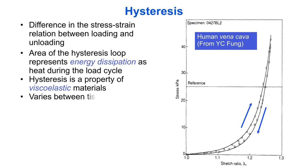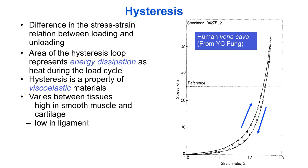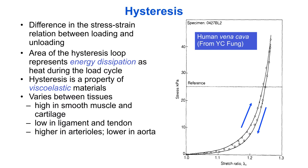Hysteresis varies considerably between tissues. It is low in ligaments, tendons, and veins, but high in cartilage and smooth muscle tissues such as intestines and arterioles, but lower in elastin-rich tissues such as aorta.